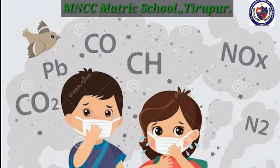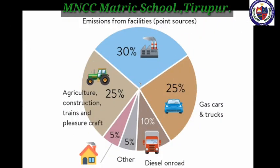First, we move to air pollution. See the pie chart — this gives emissions from different sources. The maximum air pollutants came from industries, i.e. 30%; 25% from gas cars or trucks; another 25% from agriculture, construction, trains and pleasure crafts; 10% from diesel on road; 5% from home; and another 5% from other sources.